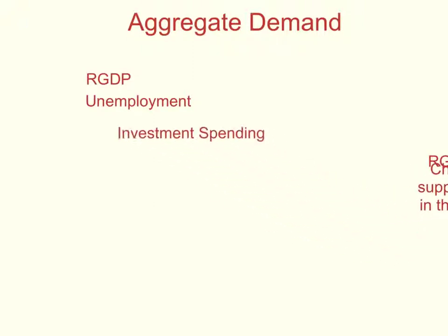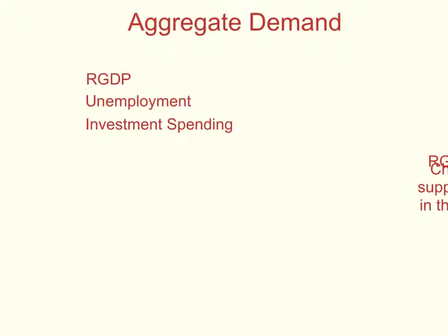The third thing that fluctuates might be a little bit surprising: investment spending. This is one component of the real gross domestic product, and whenever we have a recession, the component that decreases the most is investment spending, or business spending. So these are the three components that always fluctuate together when the economy is growing or shrinking.